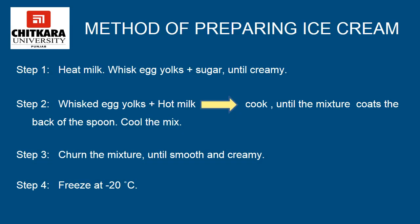Let's now discuss the method of preparing ice cream. Firstly, heat up the milk and whisk egg yolks and sugar together until creamy. Then add the hot milk to the whisked eggs and yolks, and cook over a range until the mixture coats the back of the spoon. After cooking, keep the mixture for cooling. Then churn the mixture until smooth and creamy, and freeze at minus 20 degrees Celsius.